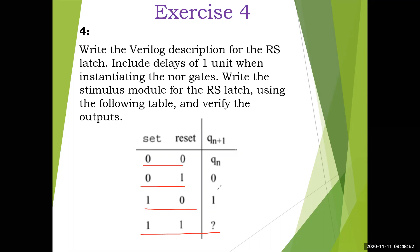RS latch is a very simple circuit. 0 0 means there is no change in the output — whatever the previous output was, it will carry over. That is the next state Q(n+1). 0 1 means reset the flip-flop. 1 0 means it will set the latch. 1 1 is an unknown value — it is an illegal transition. It may give 1, 0, or X. That's why 1 1 is illegal in SR latch.